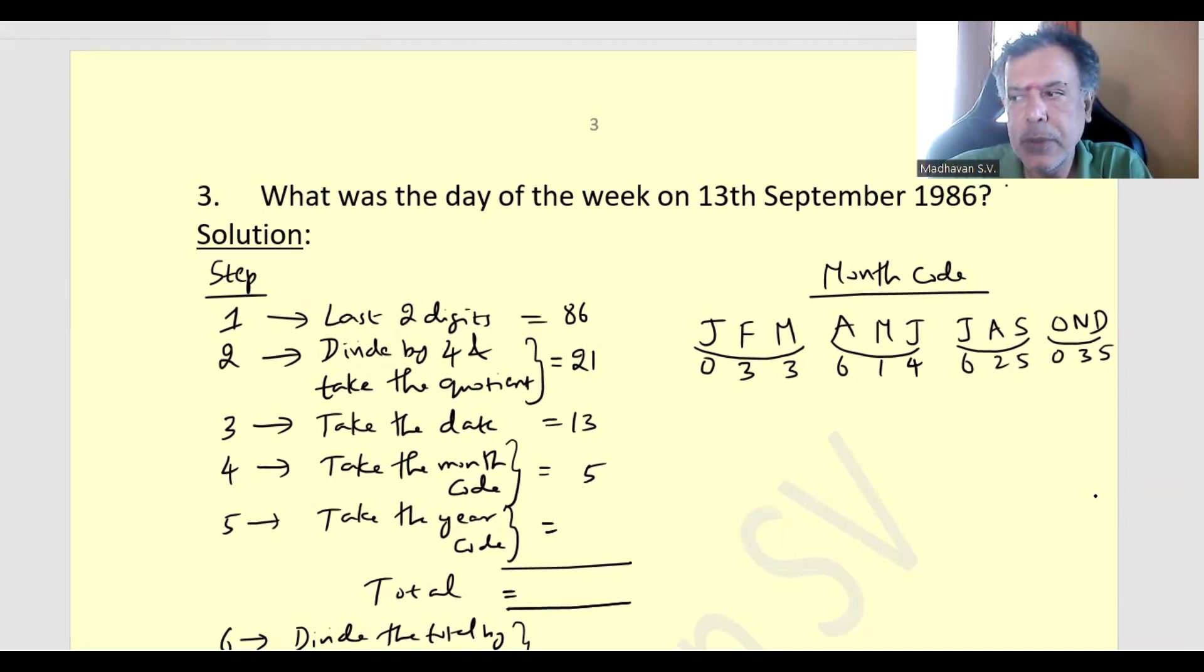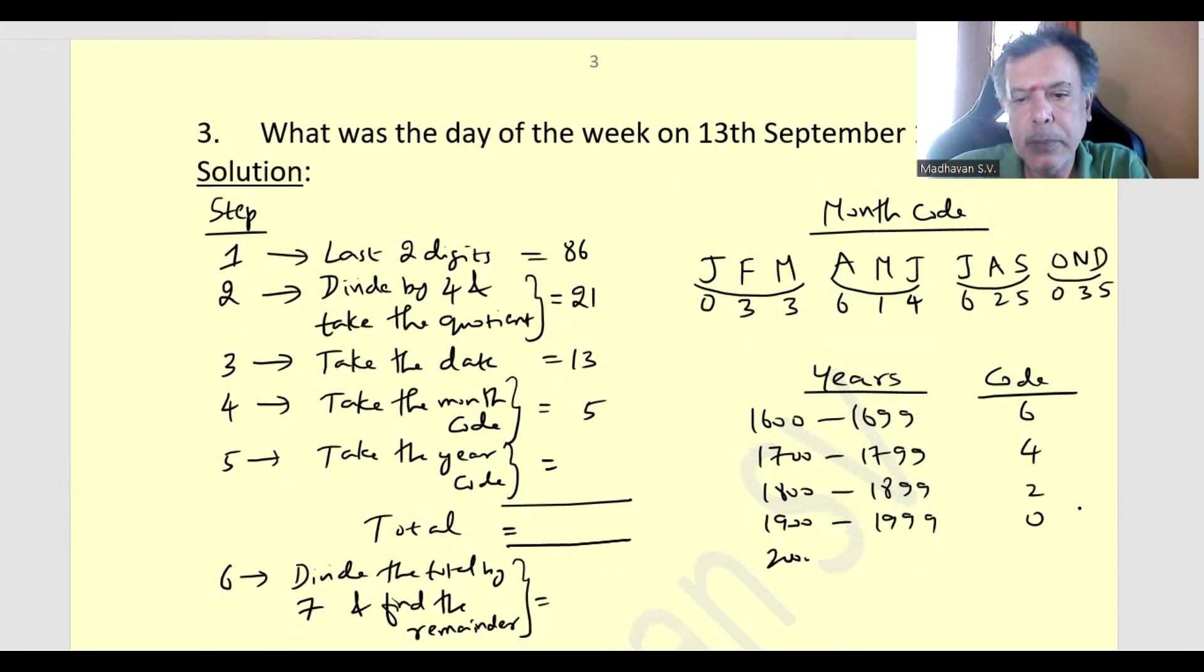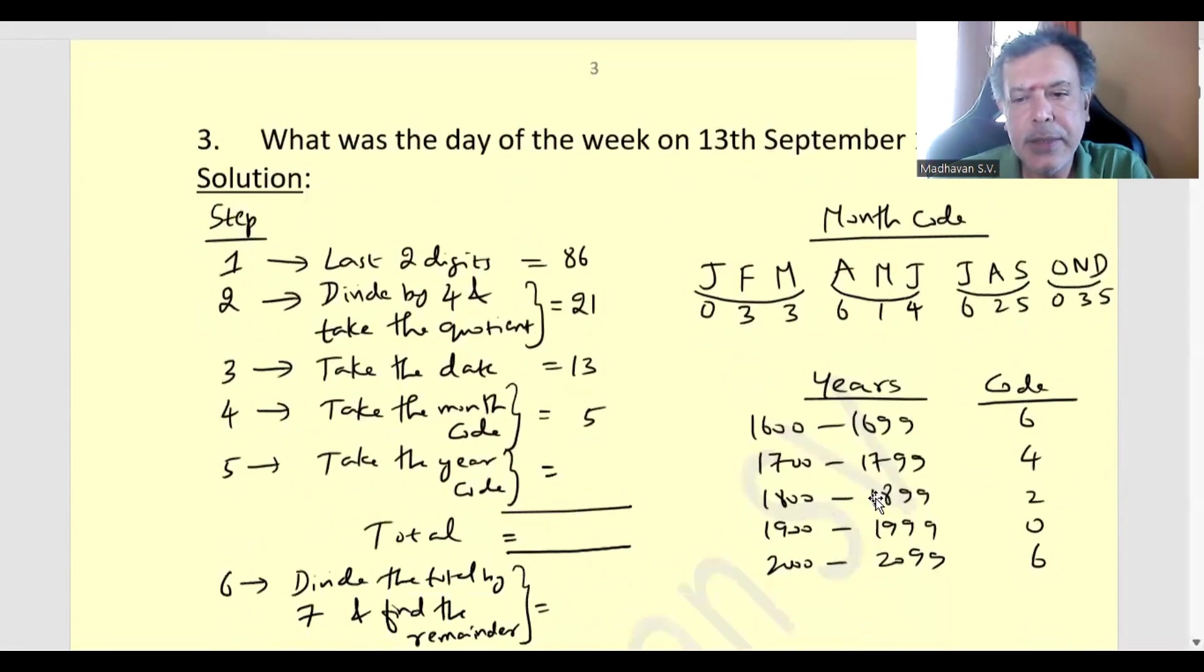Now comes the year code. 1600 to 1699 code is 6. 1700 to 1799 code is 4. 1800 to 1899 code is 2. 1900 to 1999 code is 0. Then 2000 to 2999 code is 6 again. So here the year is 1986, code is 0.